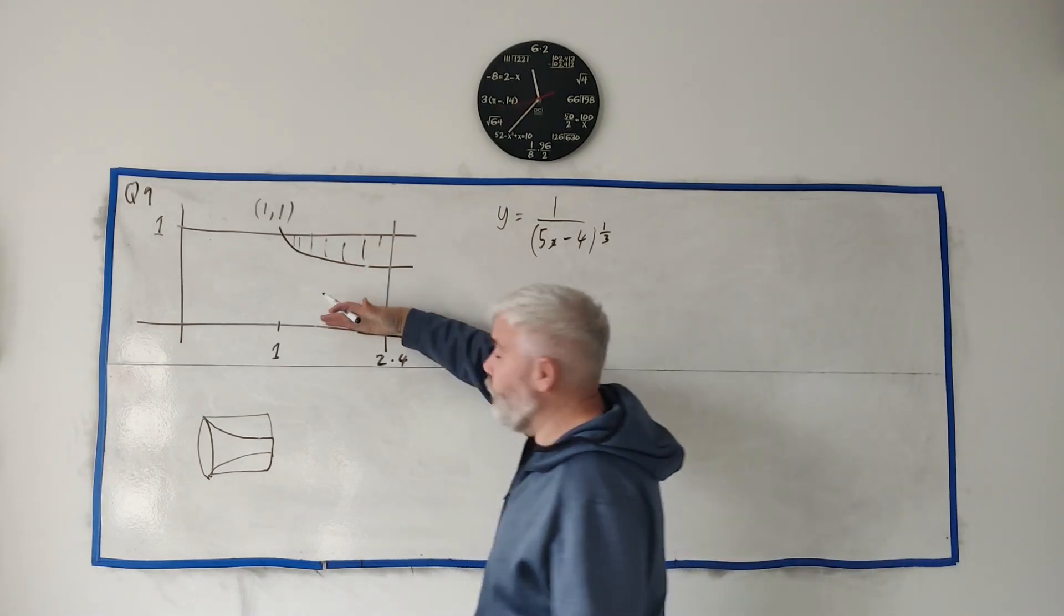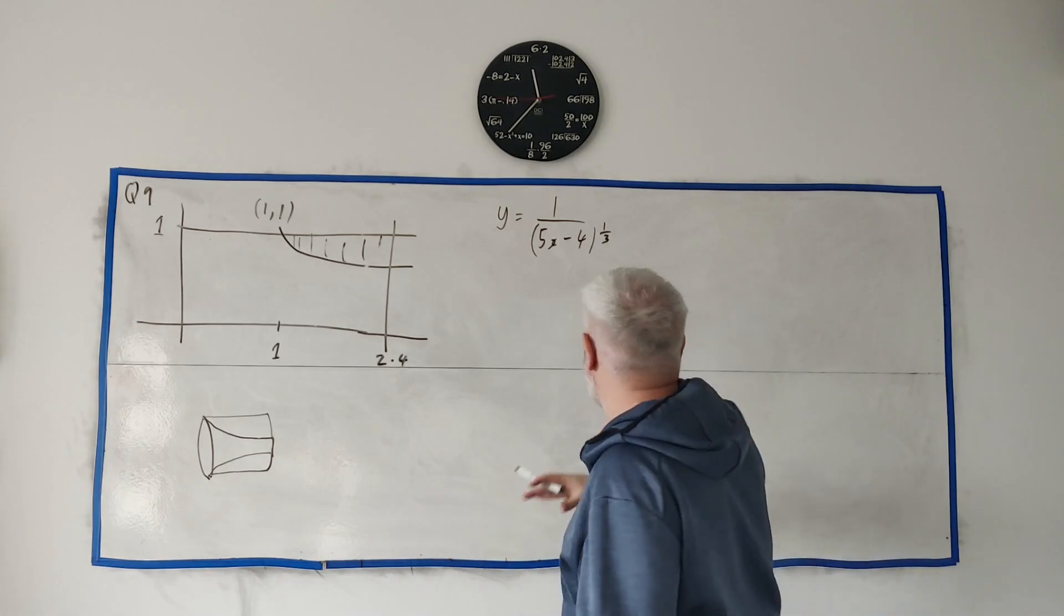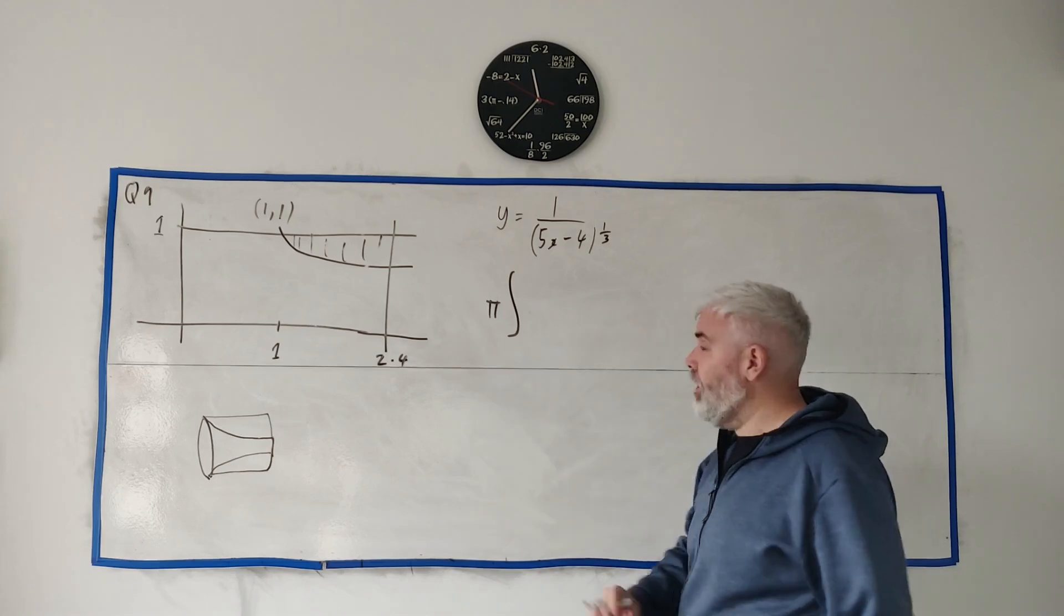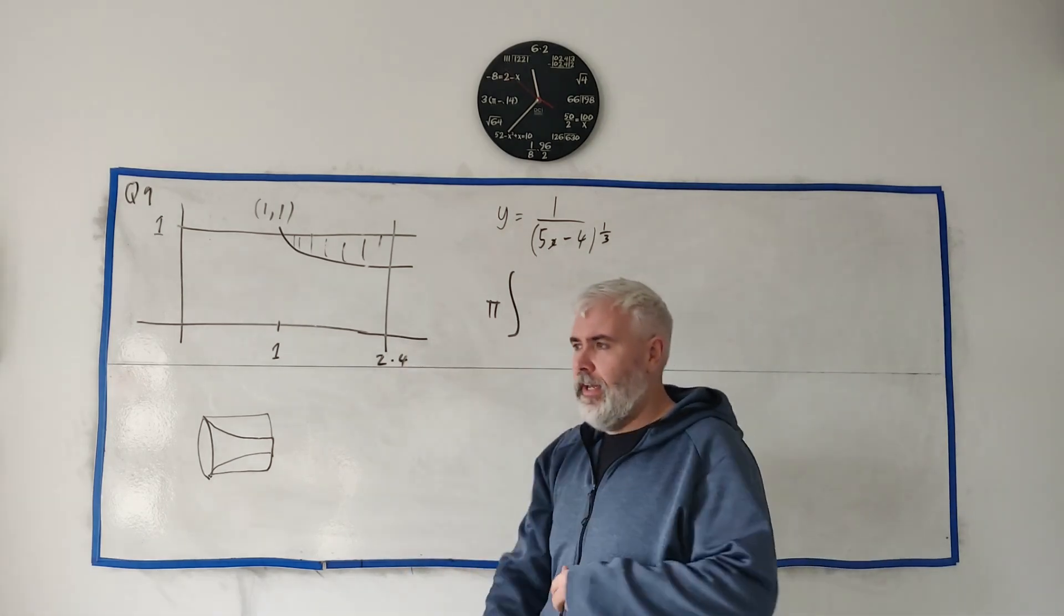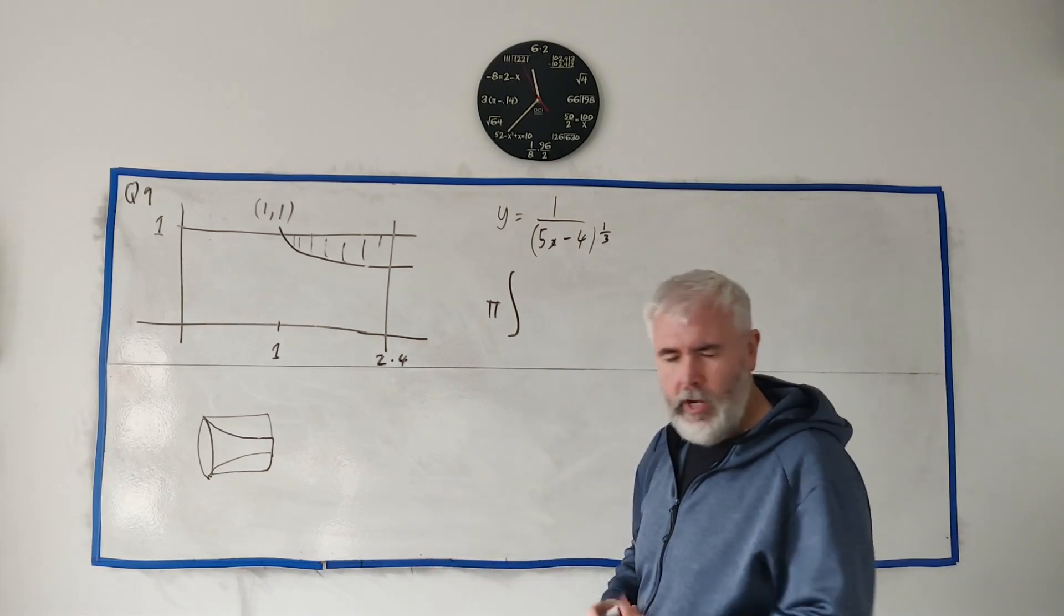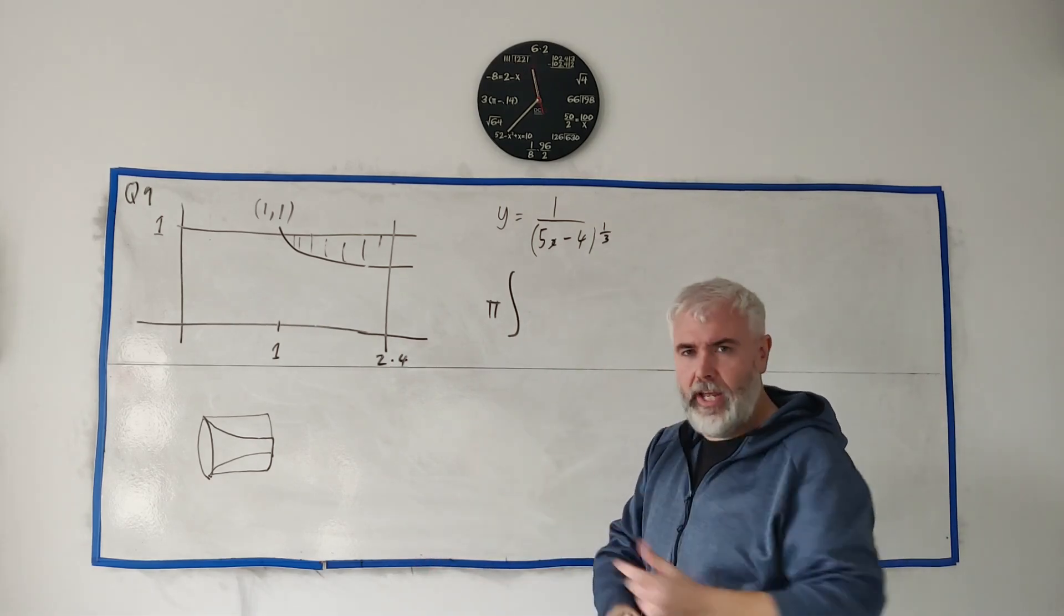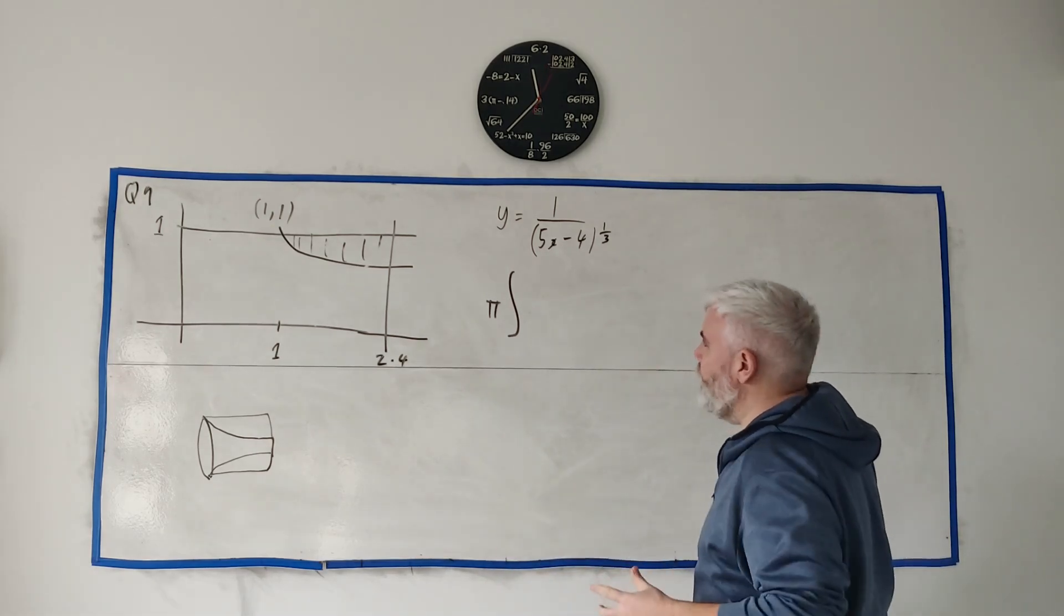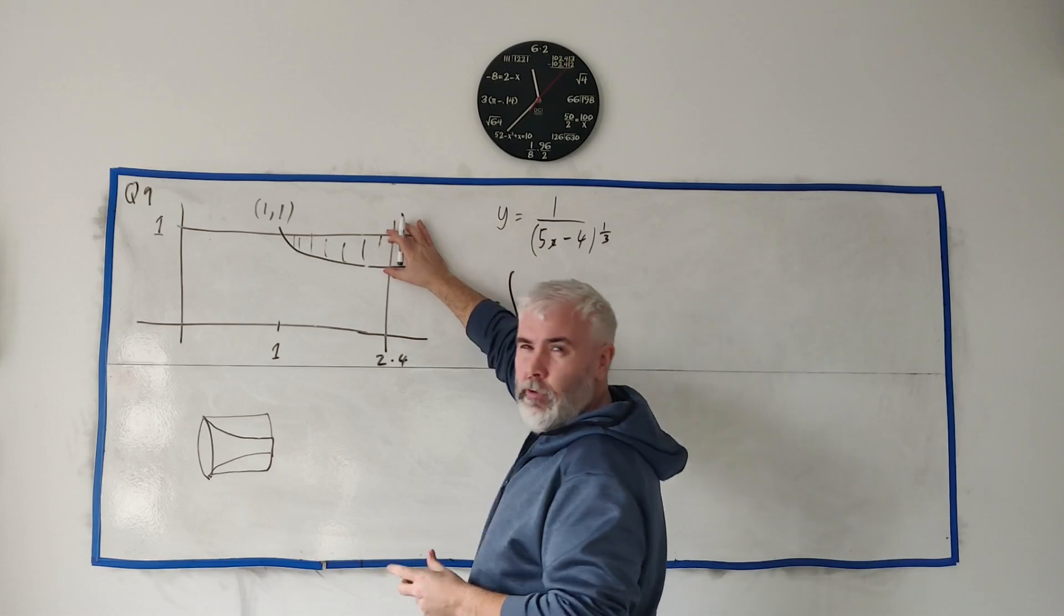But there is a formula for doing it when the shaded region doesn't touch the line, and that formula looks like this: it's the integral, you'll see pi all the time because we're talking about getting a circle. Pi r squared is very important to the idea. I won't go into the idea too much - consult your book, ask your teacher or the video will go too long.